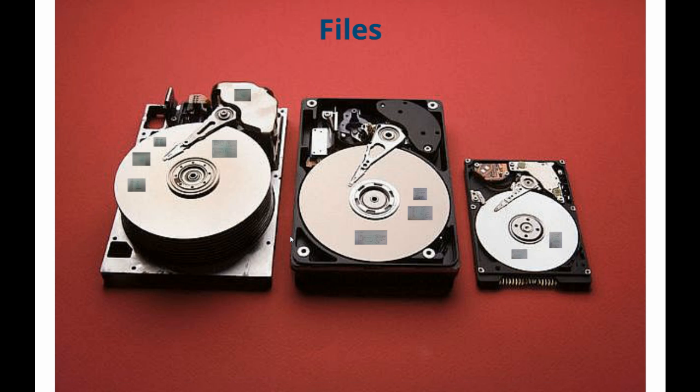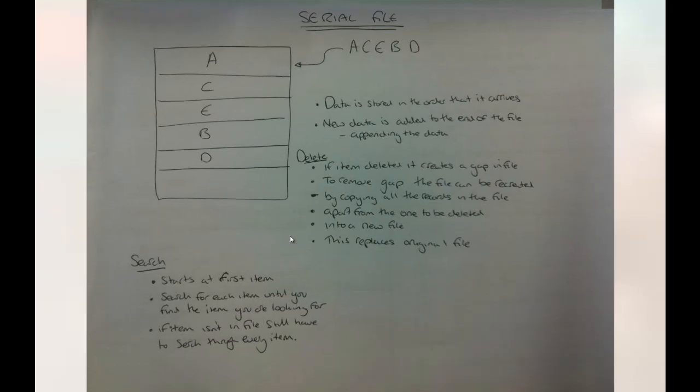Welcome to this video based upon files and file access for OCR Computing A-Level F452. The first thing we need to look at are serial files. Here is an example of a serial file.